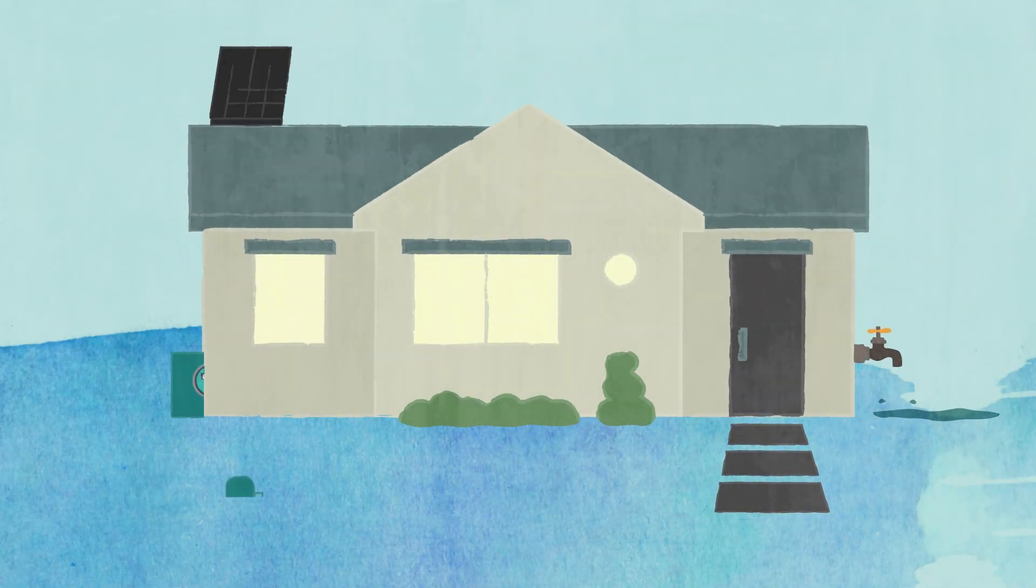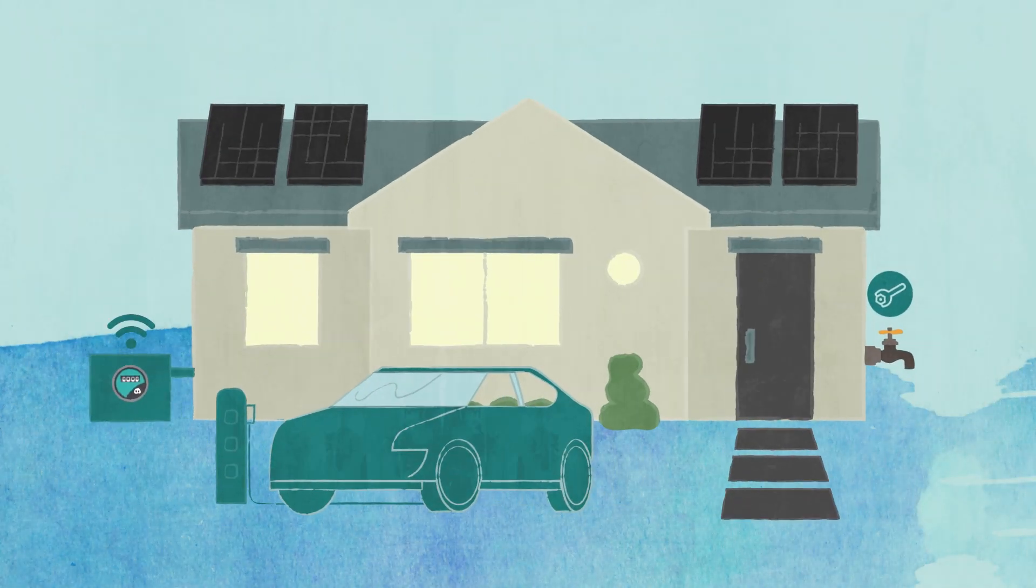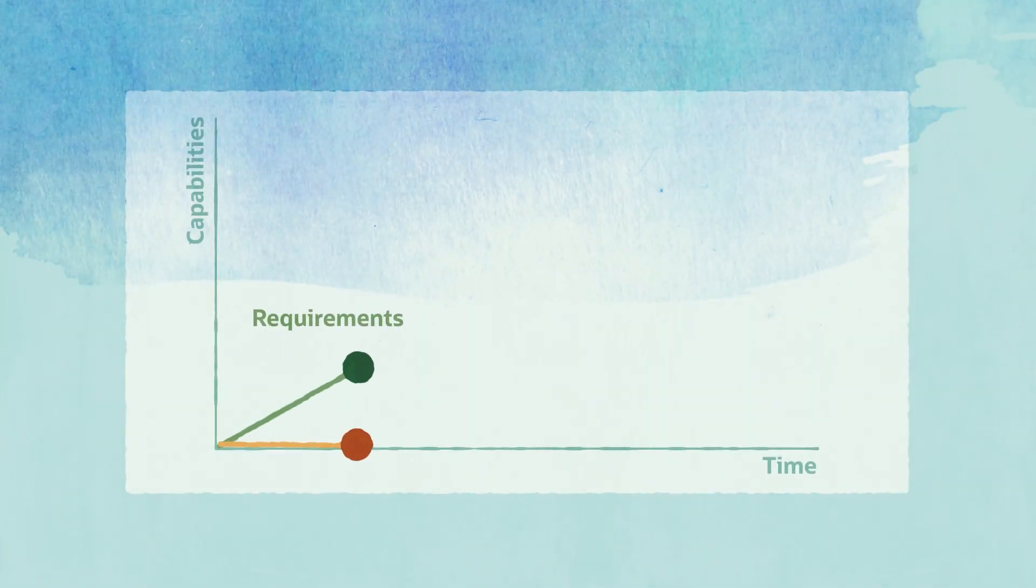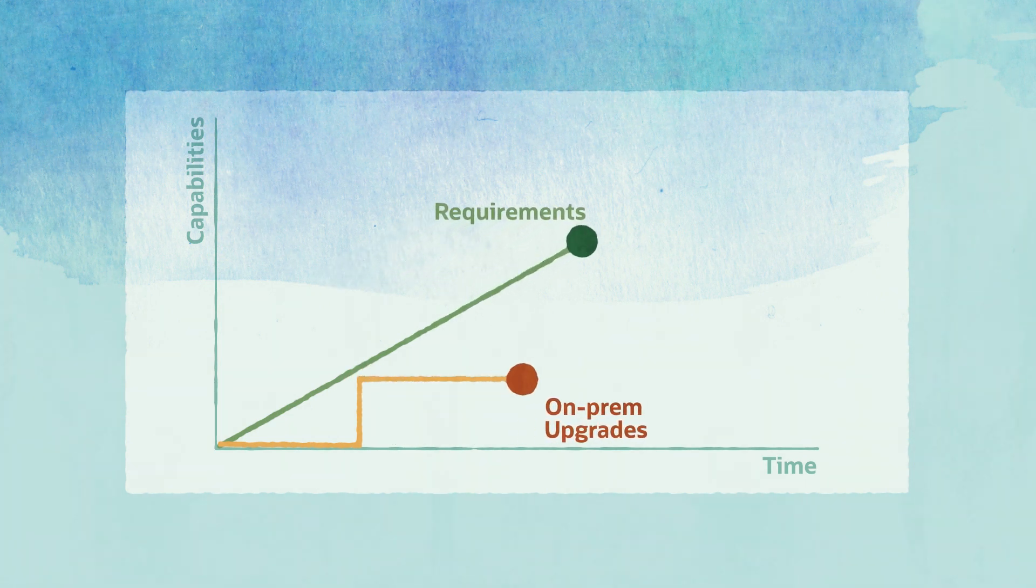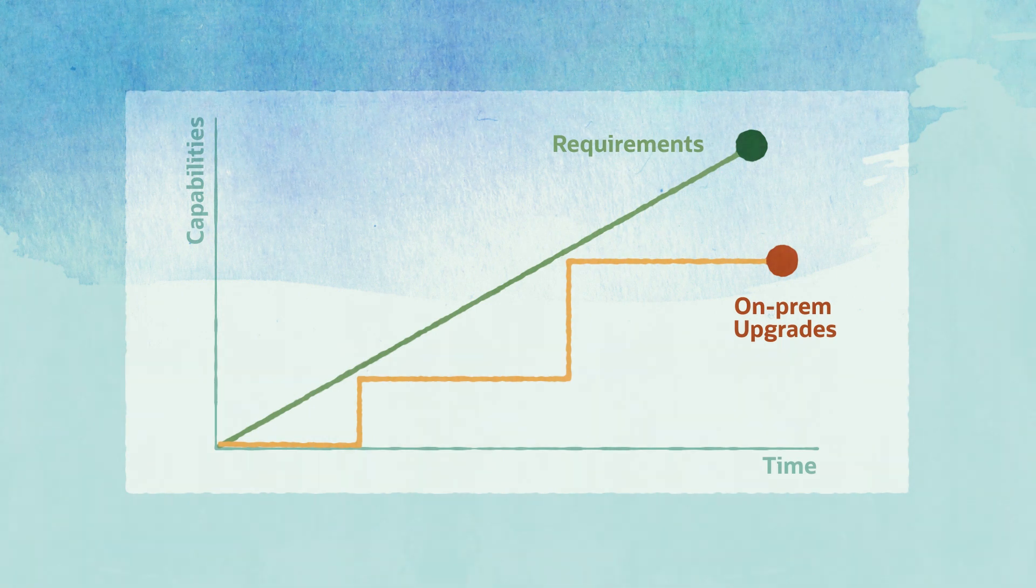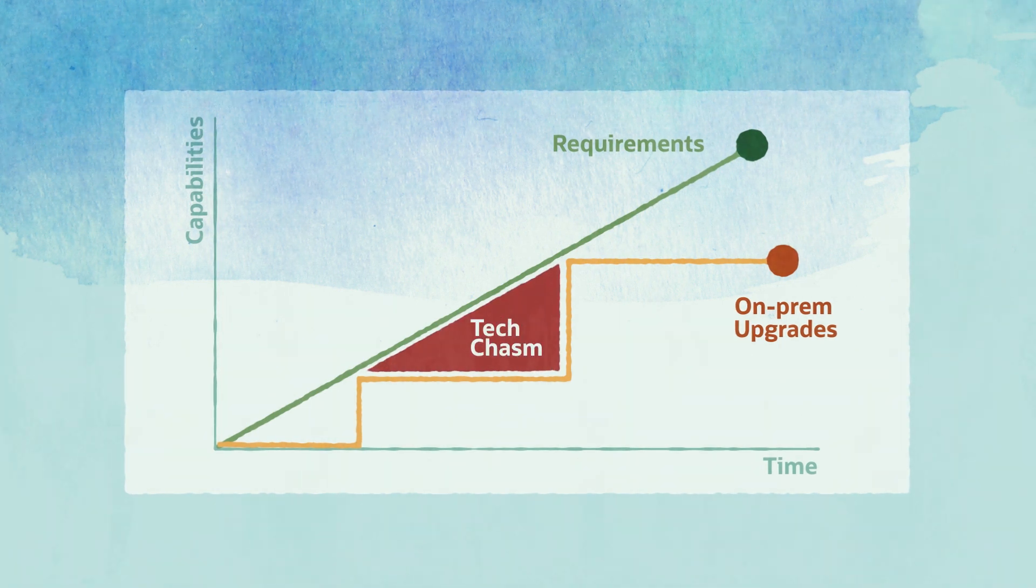The utility industry is changing rapidly, especially when it comes to serving today's energy and water customers. Unfortunately, many of the dated, inflexible customer information systems utilities rely on leave them struggling to keep pace with industry innovation in between big, disruptive upgrade projects.